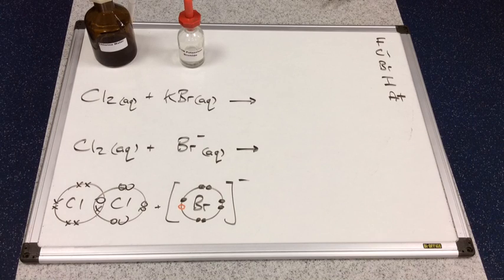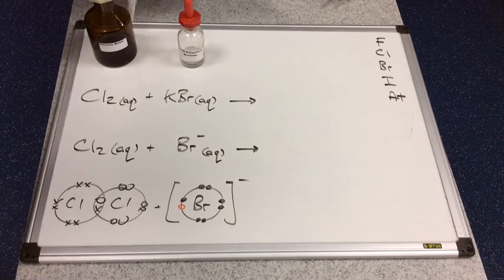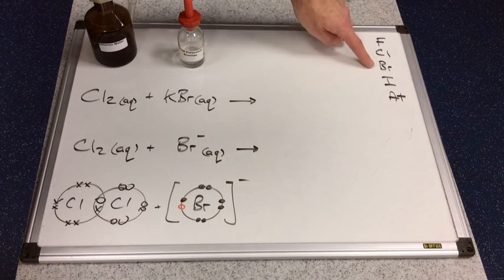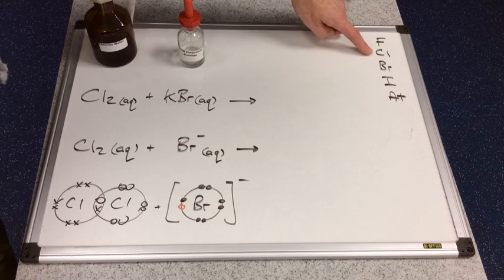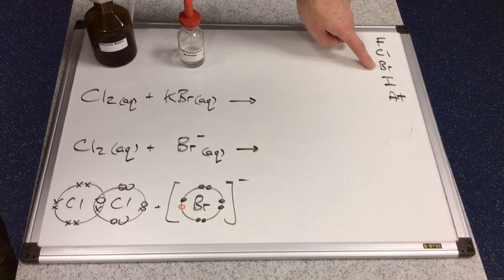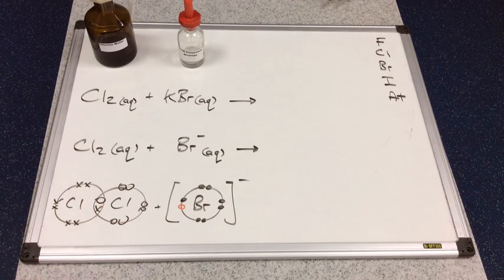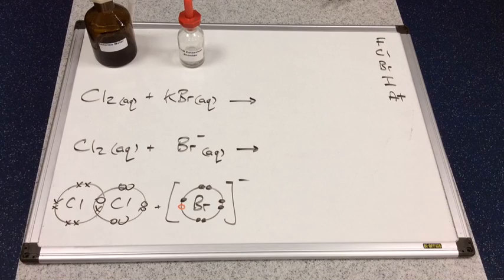You'll see in the far right-hand corner there, I've drawn up the members of group 7 in order. So we've got fluorine at the top, and astatine at the bottom. So here are the two halogens involved in this reaction. Can chlorine take the electron from this bromide ion? Let's have a look at the experiment.